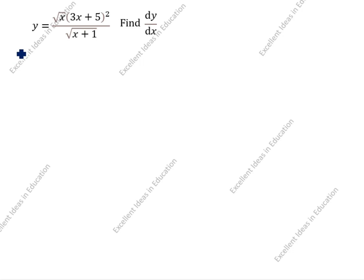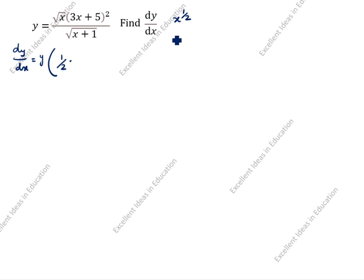How will we find this? We will see the trick now. dy/dx is equal to y times open bracket: root x — how do we write root x? x to the power 1/2 — so you write the power here, 1/2, into 1/x. Then (3x + 5) whole squared — the power 2 is there.